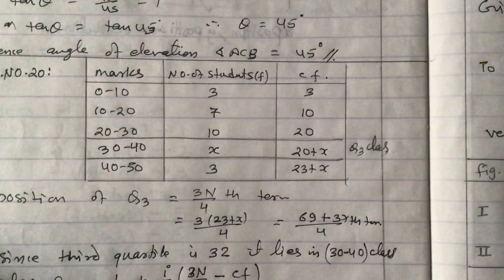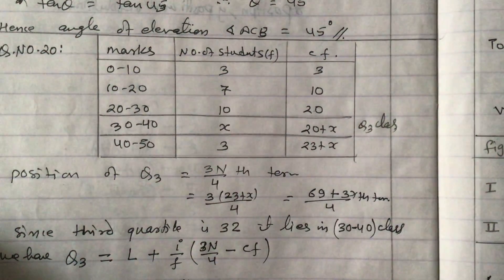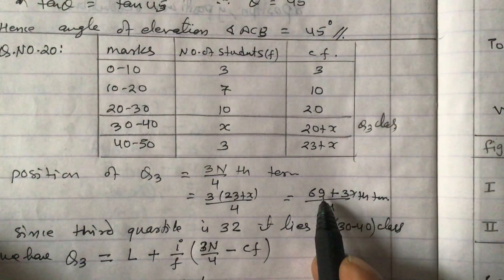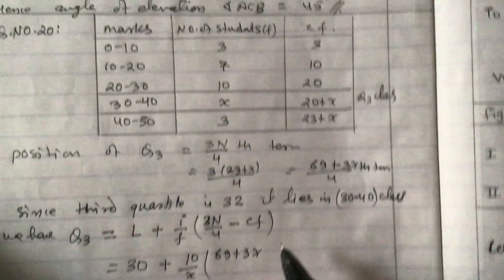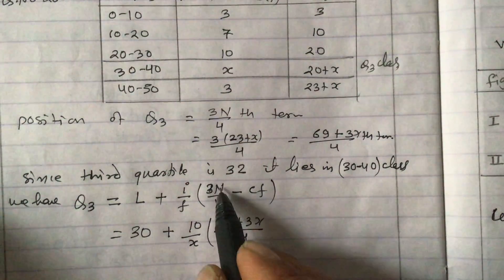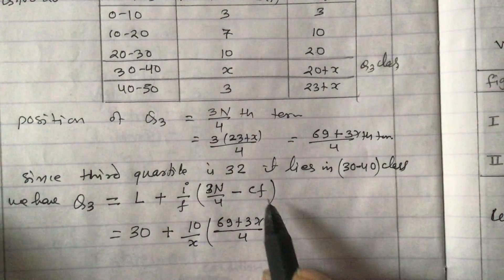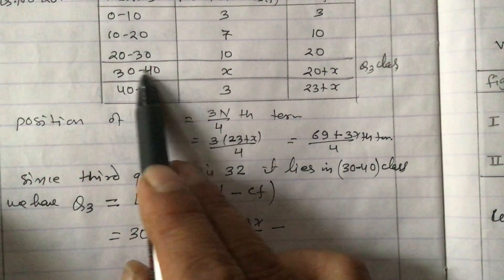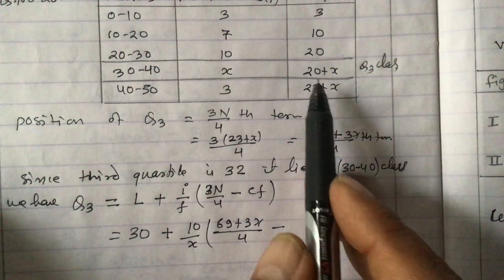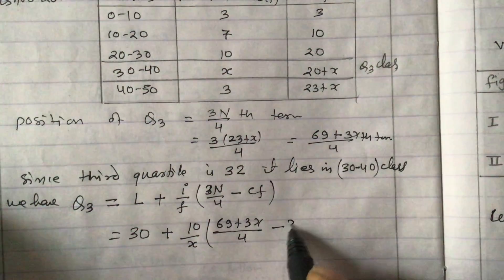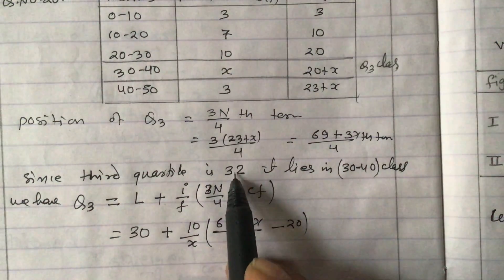By f, f means the frequency of the Q3 class. This is our Q3 class, so frequency here is x. Then (69 plus 3x) divided by 4, this is 3N by 4. Minus cf, which is the cumulative frequency of the preceding class. This is 20. Q3 is given as 32.